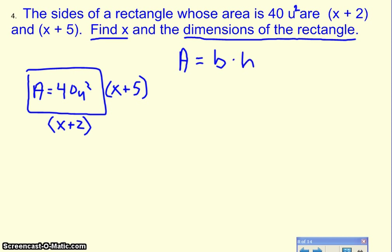Well, you use base times height. So now, what I can do is I can rewrite this formula, but instead of a, put in 40. Instead of the base, put in x plus 2, and instead of the height, put in x plus 5. So let's go ahead and do that.